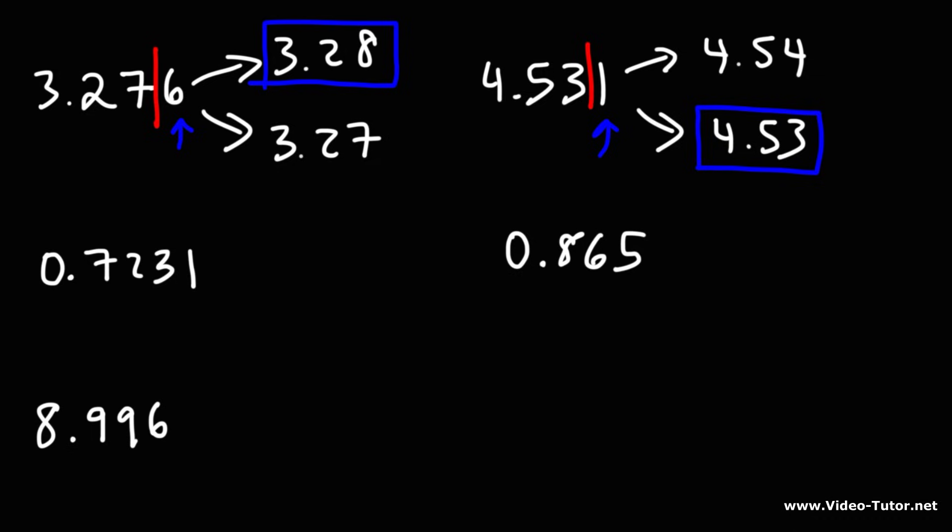Now, what about the next one, 0.7231? How can we round that to the nearest hundredths? So let's put a line after the hundredths digit, that is, after the 2. And personally, I like to write the two possibilities. We can round it down to 0.72 or round it up to 0.73.